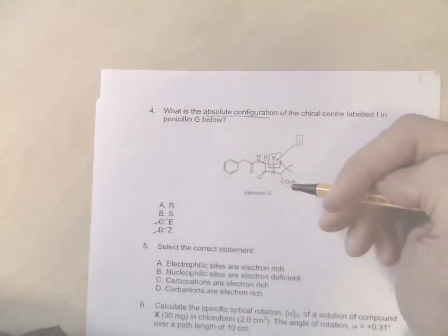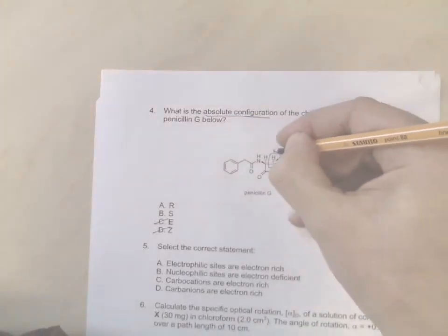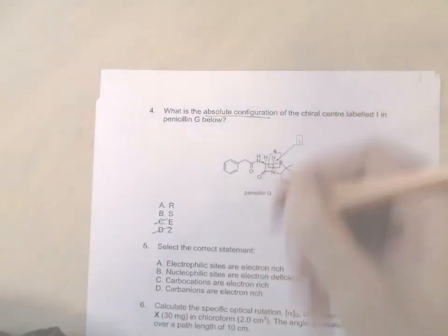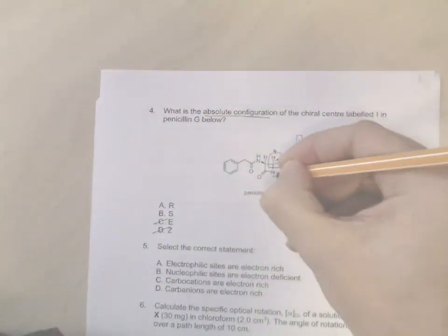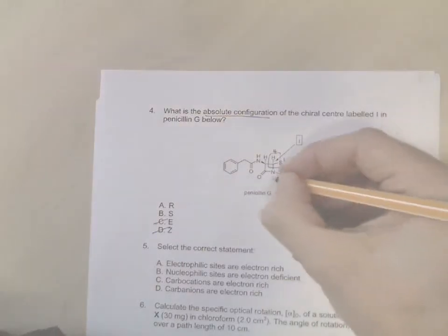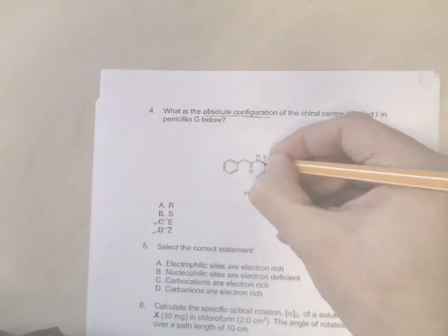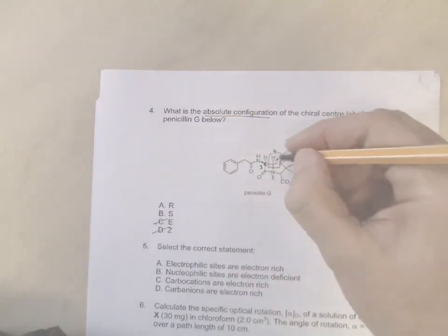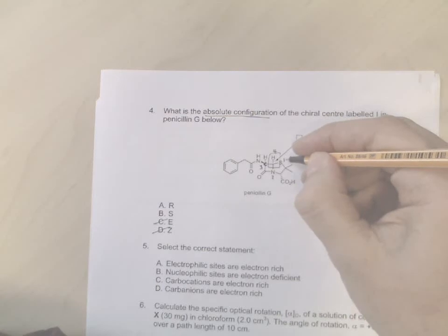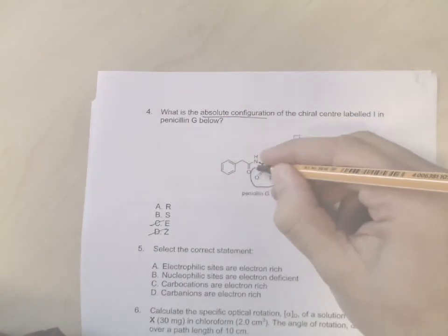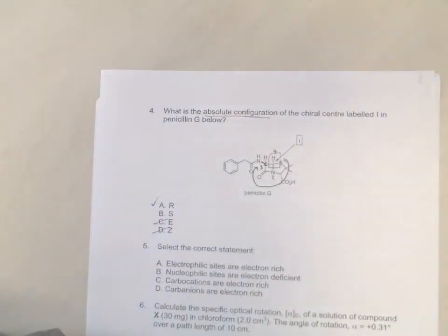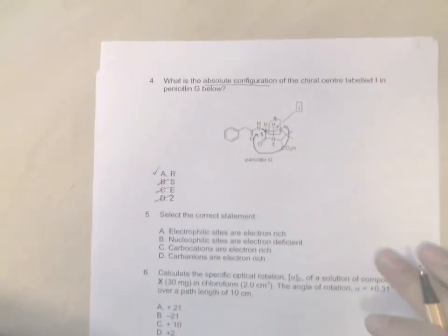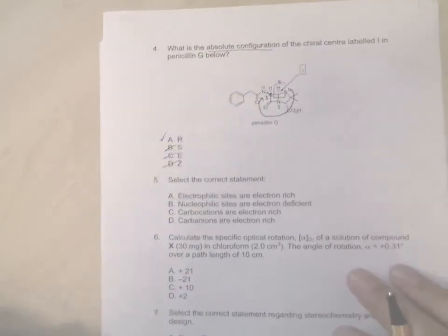So now we need to work out if it's an R or an S chiral center. Well here it's exactly the same as we've done in lectures. The hydrogen will be priority four. The sulfur has a higher atomic number than nitrogen, so that will be one. Nitrogen has a higher atomic number than carbon, so that will be two. And your carbon, which is this carbon here, will be three. The hydrogen is going back, so we're in the correct orientation. We go from one to two to three in a clockwise fashion, so this particular chiral center is R. So we can get rid of S as an answer.